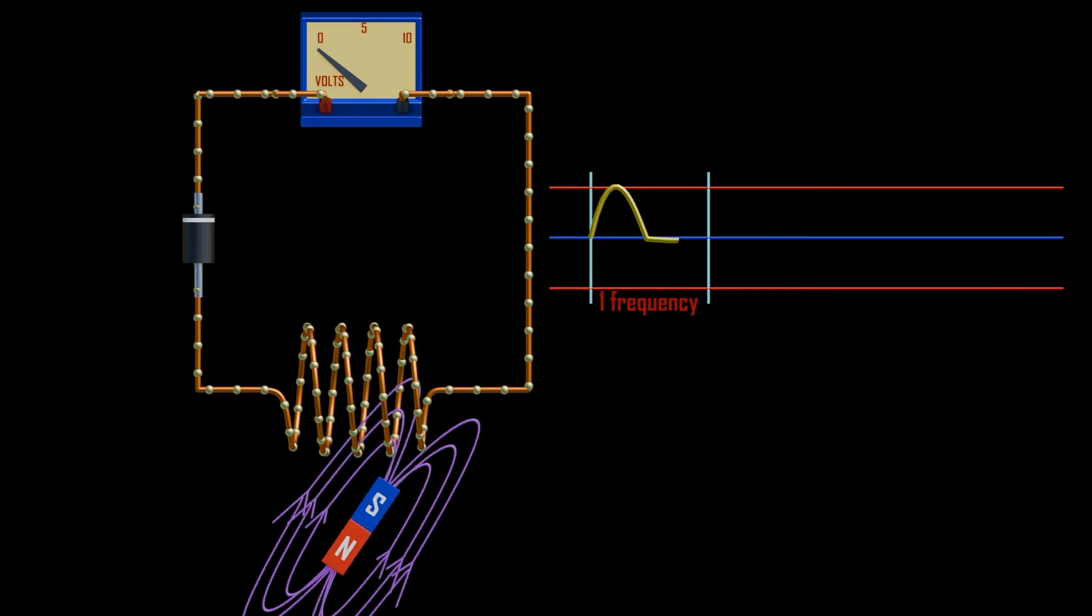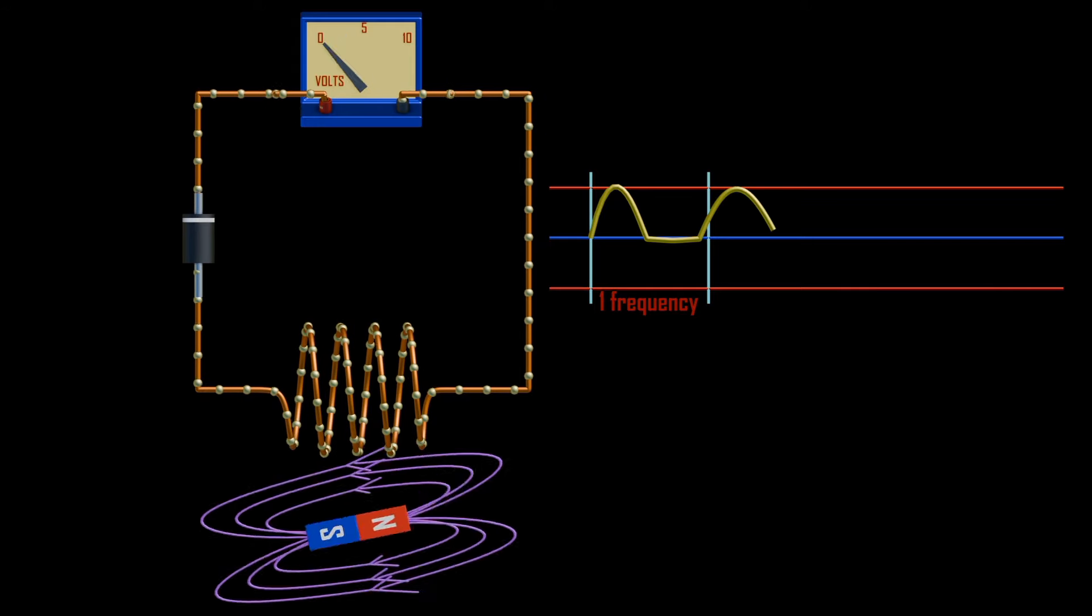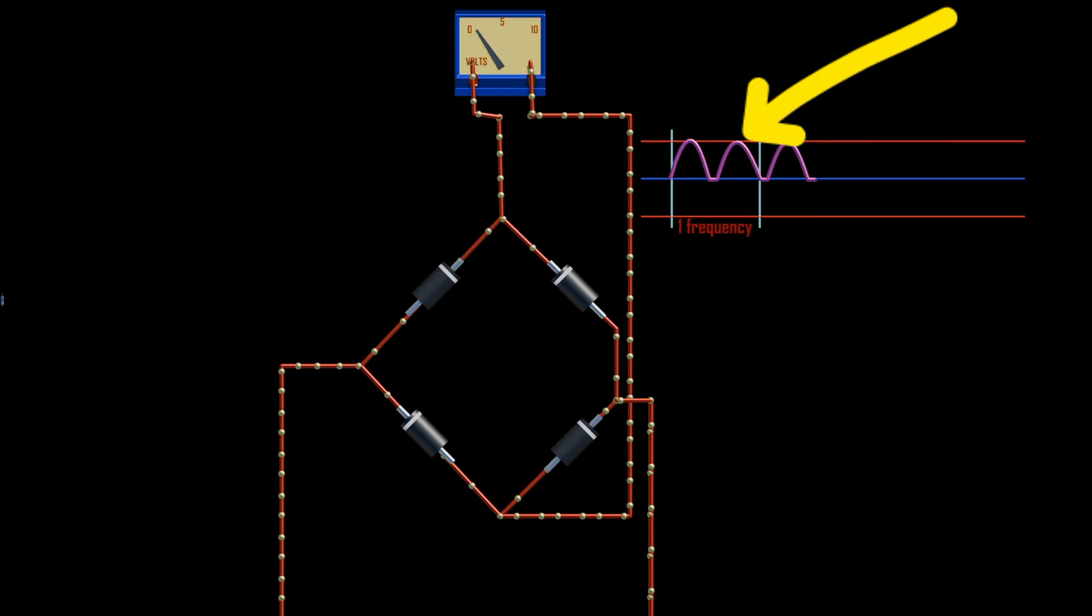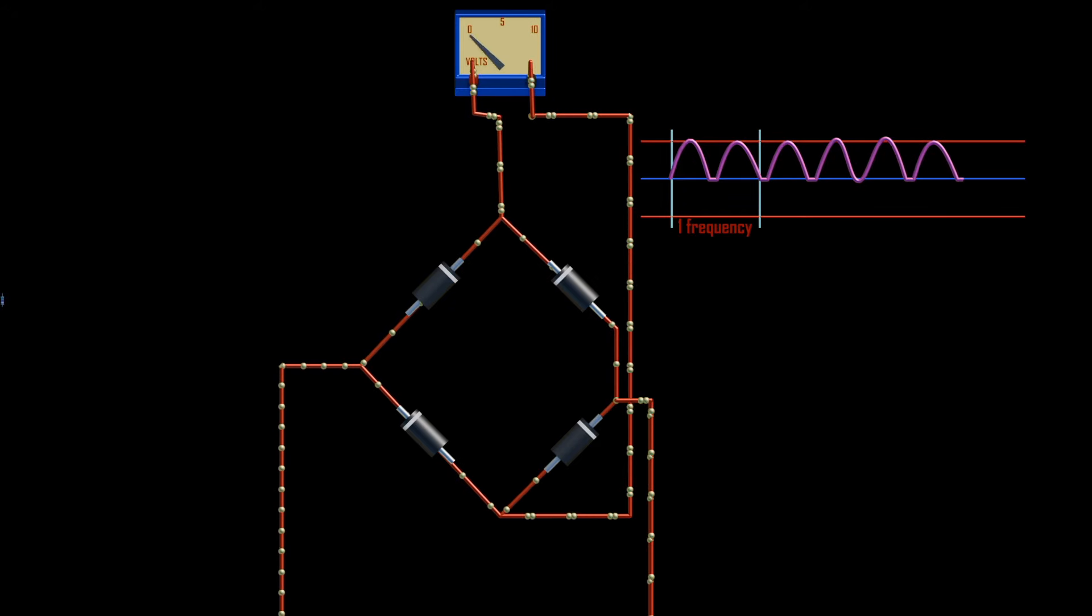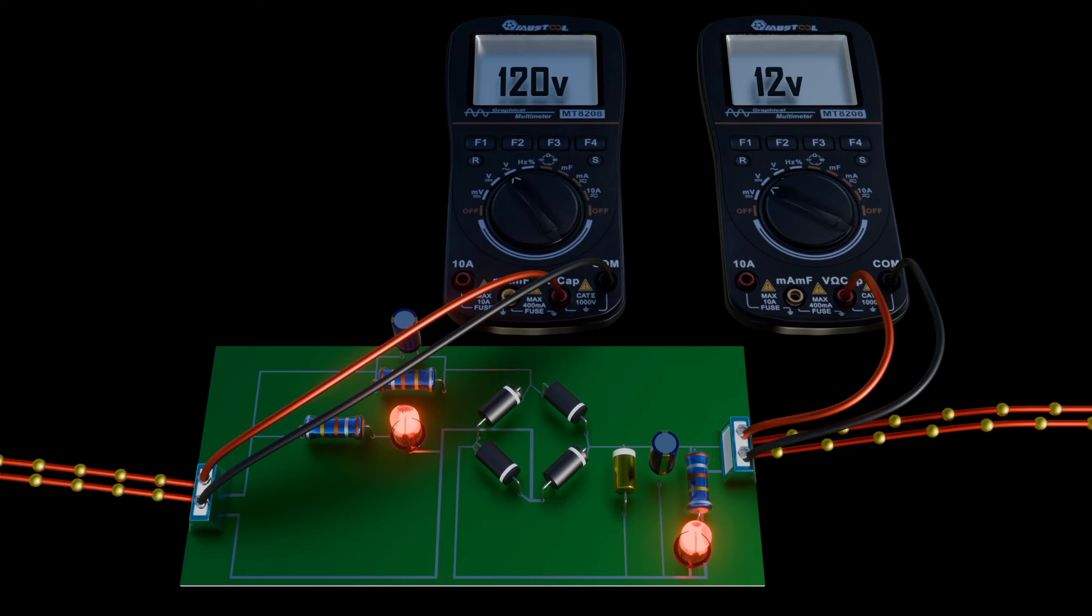We can remember from our previous tutorials that the DC output voltage from half or full wave rectifiers contains ripples which are superimposed onto the DC. By connecting a simple Zener stabilizer circuit across the output of the rectifier, a more stable output voltage can be produced.